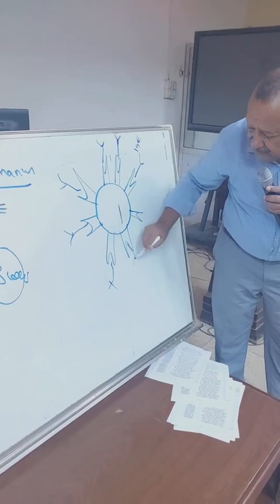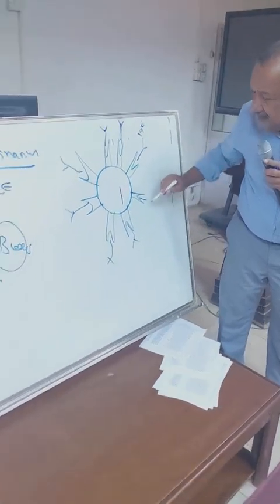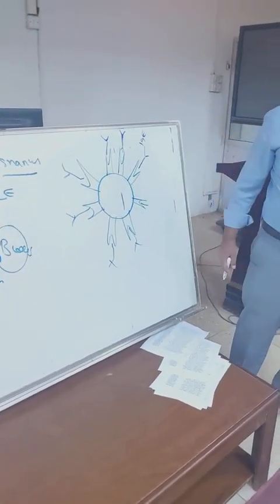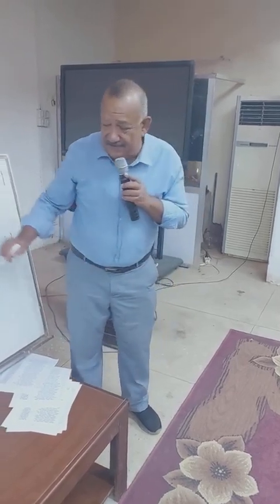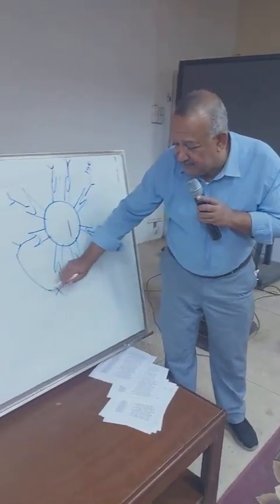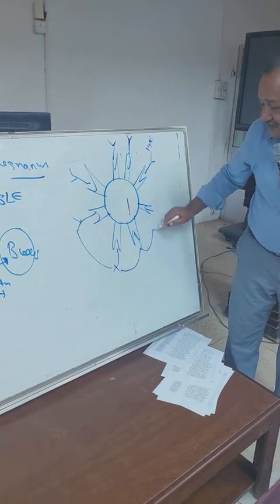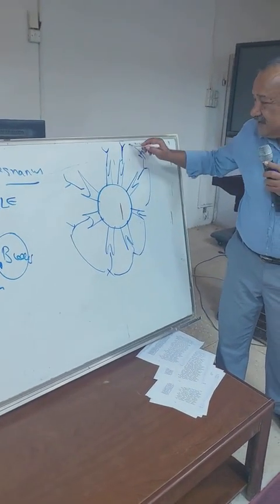These are IgE antibodies. During the second exposure, if you are exposed to the antigen again or the dust again, these antigens will cross-link the antibodies together.